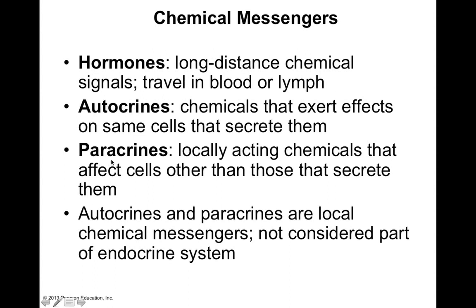Some other chemical messengers include autocrines and paracrines. Autocrines are defined as chemical messengers that are released by a cell and go on to exert an effect on the same cell that secreted that chemical messenger, and these are often used in feedback mechanisms. Paracrines are chemical messengers that are released by a given cell and are locally acting, which means they don't travel through your blood or lymphatic system. Rather, paracrines are going to have an effect on adjacent cells.